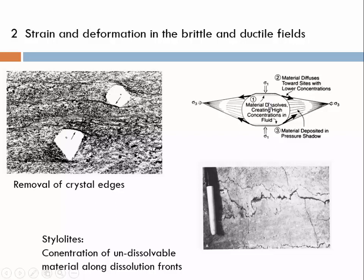Here we see an illustration of how that happens: removal from high-stress sites and redistribution of material to lower-stress sites. The material dissolved from the euhedral crystal may have gone into solution and been re-precipitated somewhere else.